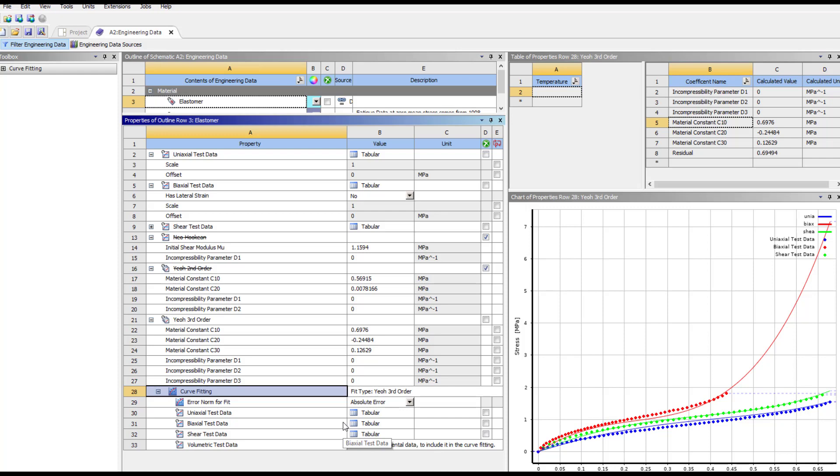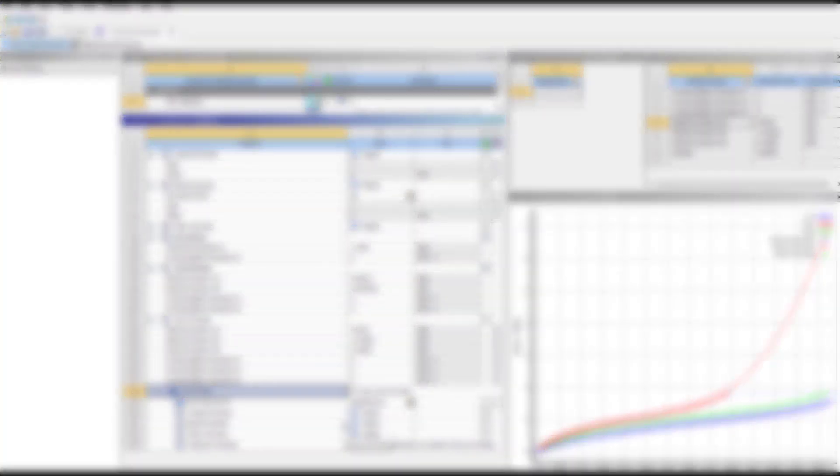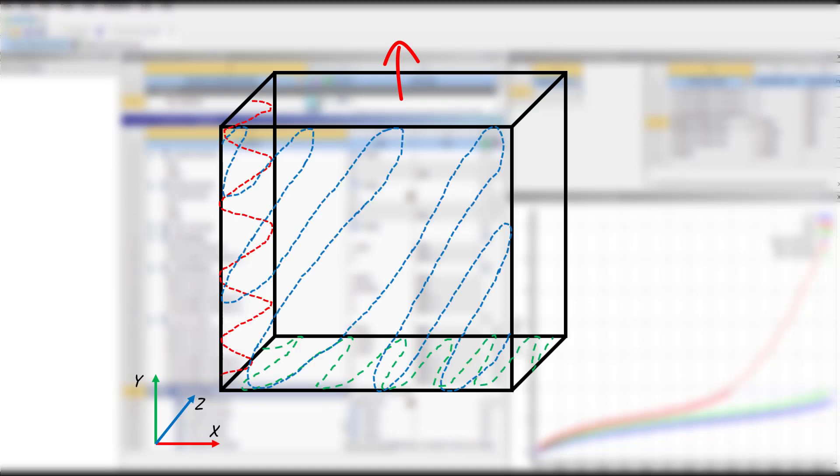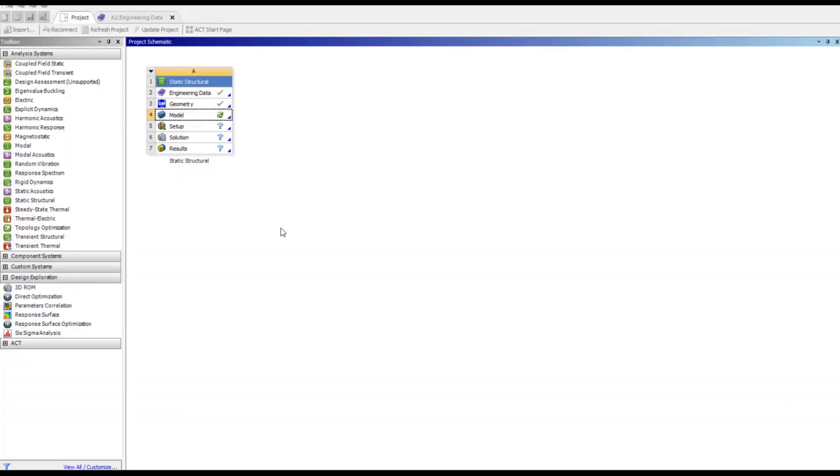In this demo, we'll simulate the uniaxial tension of a unit cube. The cube is fixed in x, y and z direction on three faces and the other three faces are left free to deform. By doing so, we are creating a state of uniform deformation in the cube. Attach the geometry and open mechanical.